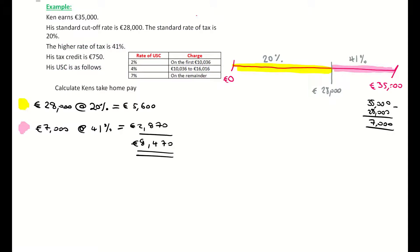The universal social charge is given in this question as three bands: 2%, 4%, and 7%. You have to do them separately. Ken has to pay 2% on the first 10,036 euro he earns. On the calculator that's 10,036 multiplied by 0.02, which comes to 200 euro and 72 cent.